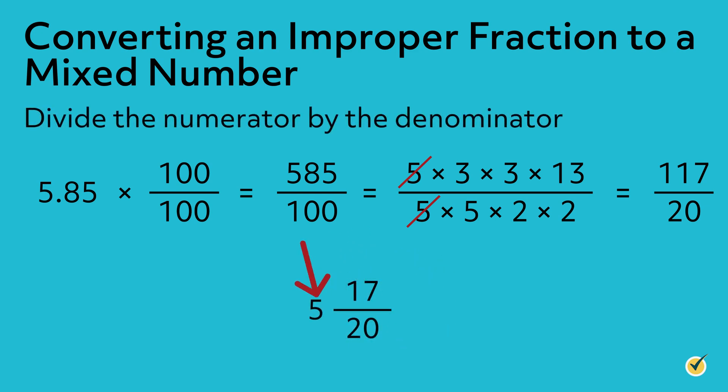The whole number becomes the number in front of the fraction, the remainder becomes the numerator of the fraction, and the denominator of the fraction remains the same. Therefore, 117 over 20 converted to a mixed number is 5 and 17 twentieths.